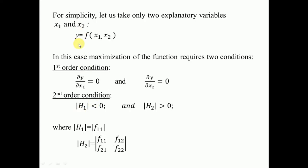For simplicity, let us take only two explanatory variables x1 and x2. In this case, the maximization of the function requires the first order condition: partial derivative of y with respect to x1 equal to 0, and partial differentiation of y with respect to x2 equal to 0. The second order condition is H1 must be negative and H2 must be positive. With two variables, H1 = f11, and H2 has elements f11, f12, f21, and f22.